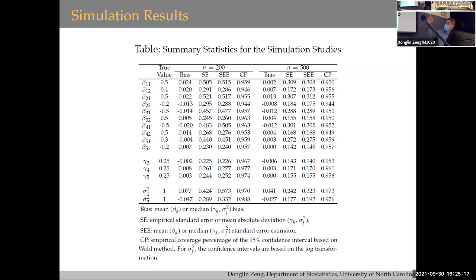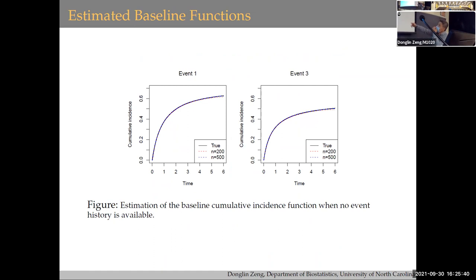For the cumulative baseline function estimator, the dashed line is the estimated one and the solid line is the truth — the average is very close. Each dataset typically requires about 300-400 EM iterations, though this varies depending on the data.